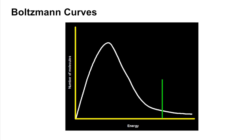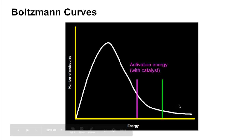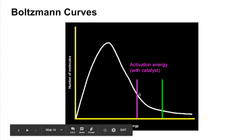Finally, the effect of a catalyst on reaction rate using a Boltzmann curve. A catalyst lowers the activation energy, so we draw another activation energy line with the catalyst — shown as a pink line. You can see the area under the curve — the number of particles with at least this new lower activation energy — has increased quite significantly. So there'd be more successful collisions per second.